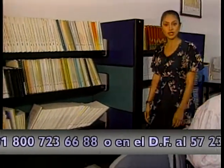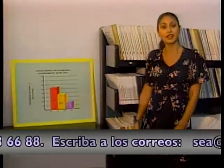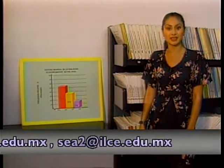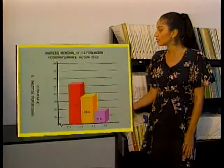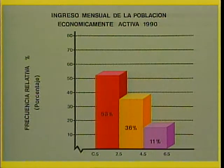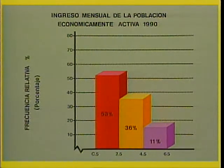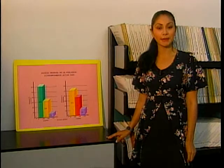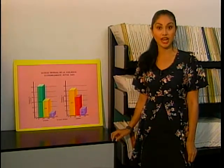El INEGI realizó en 1990 el Censo General de Población y Vivienda, el cual captó los ingresos por trabajo de la población ocupada o económicamente activa. Como podemos ver en estas gráficas, en 1990 el 53% de esa población declaró percibir ingresos equivalentes entre 1 y 2 salarios mínimos. En un estrato medio se ubicó el 36% de los ocupados con ingresos de 3 a 4 salarios mínimos, y el 11% declaró percibir ingresos entre 5 y 6 salarios mínimos. Gran parte de la población trabajadora percibía ingresos entre 1 y 2 salarios mínimos.